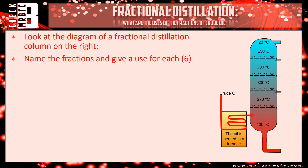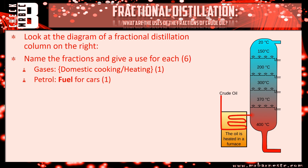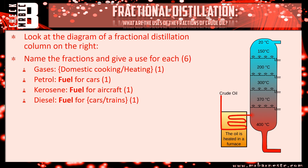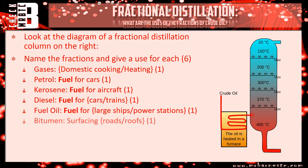Okay, let's see how you've done. Going in order: at the very top we have our gases, used for domestic cooking or heating — cooking or heating would get you the mark along with the name gases. Second one down is petrol, and it's a fuel for cars. You needed to say petrol and fuel for cars to get that one mark. Kerosene is a fuel for aircraft. Diesel is a fuel for either cars or trains. Fuel oil is a fuel for either large ships or power stations. And then bitumen is for surfacing either roads or roofs.